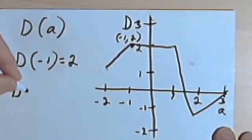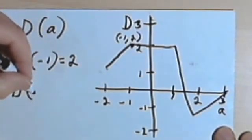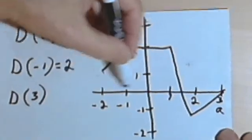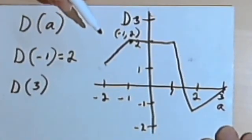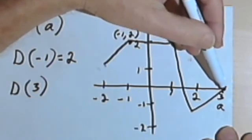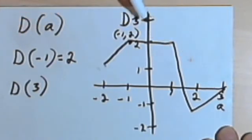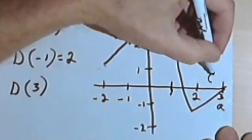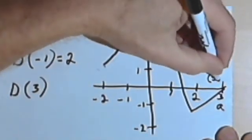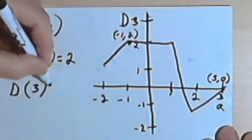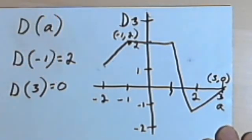Let's say I'm told to evaluate d of 3. So I'll go to the 3 on the horizontal axis, on the a-axis, and I find out that when a equals 3, the d value is just 0. I could write this as an ordered pair, 3 comma 0 is my input and my output. So d of 3 is going to equal 0.